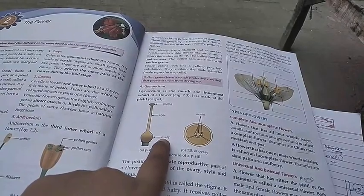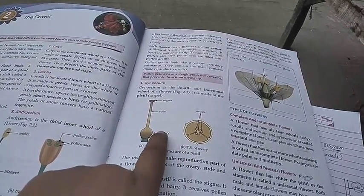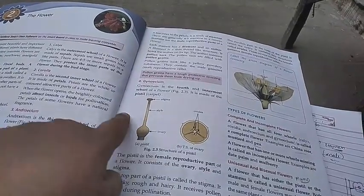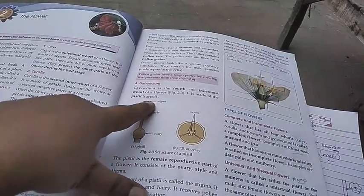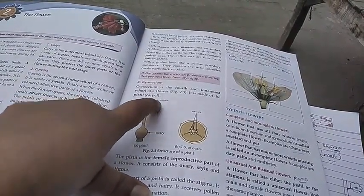First, spelling of ovary: O-V-A-R-Y. Then style - the middle part is the style, which connects the stigma and ovary. And the top part is stigma: S-T-I-G-M-A.